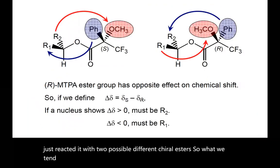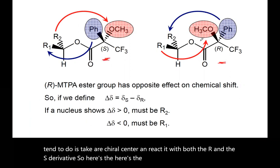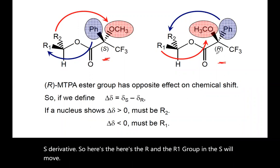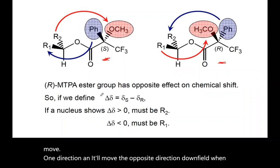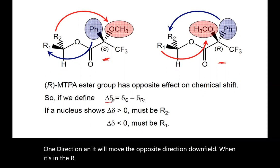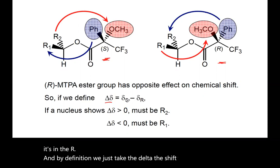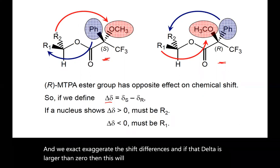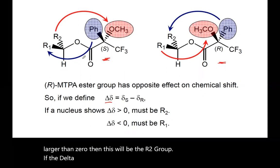So what we tend to do is take our chiral center and react it with both the R and the S derivative. So here's the S, here's the R and the R1 group in the S will move one direction and it'll move the opposite direction downfield when it's in the R. And by definition, we just take the delta, the shift, the delta delta, and we subtract the shift of the S minus the R and we exaggerate the shift differences. And if that delta is larger than zero, then this will be the R2 group. If the delta is less than zero, that must be the R1. And that sounds a little arbitrary, but let's take a look at an example.